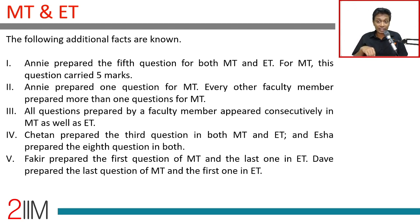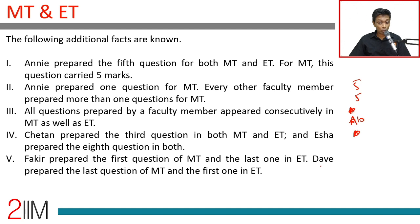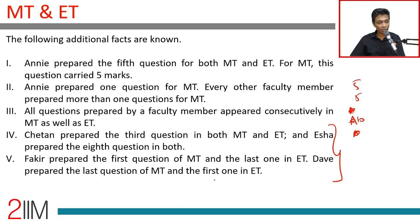Annie prepared the fifth question for both MT and ET. For MT, this question carried five marks. Annie prepared only one question for MT; every other faculty member prepared more than one question for MT. All questions prepared by a faculty member appeared consecutively in MT as well as ET — meaning each faculty member's questions form a block. The first and last questions are not prepared by the same person.